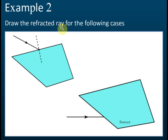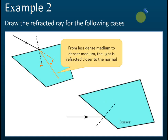To draw the refracted ray, first draw the normal. If this is glass and the light is going from air into glass — less dense to denser — the light ray will be refracted closer to the normal. Suppose it would move straight forward, but after refraction it moves closer to the normal. This applies in each such case: from less dense medium to denser medium, the light ray is refracted closer to the normal.